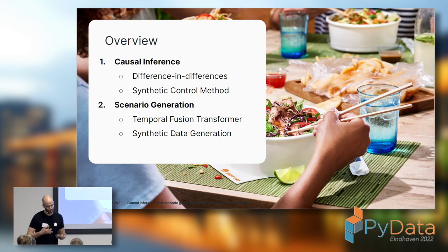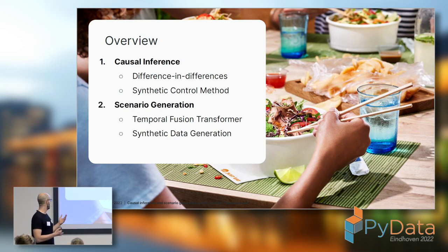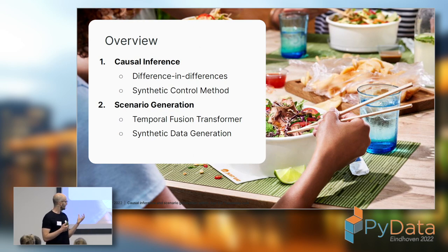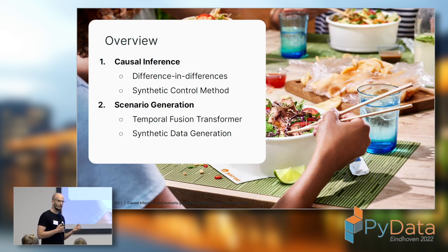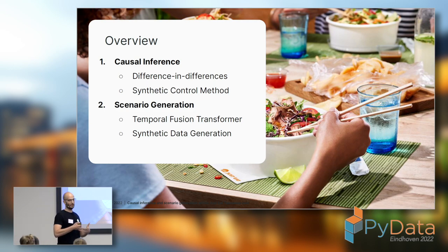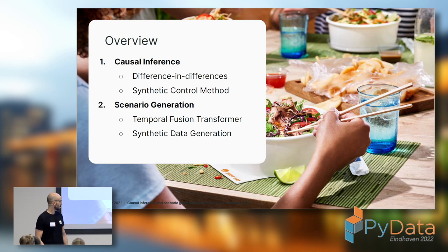I'm going to talk about causal inference and synthetic data generation and scenario generation — these are two different parts of data science. Causal inference, which was also discussed a lot today, is mainly interested in treatment effects; you want to isolate the treatment in order to make a causal statement. With scenario generation we mostly use predictive models, drop the requirement of causality, and are just interested in generating likely scenarios. Even though these things are hugely different, they all serve the same purpose of making actionable insights.